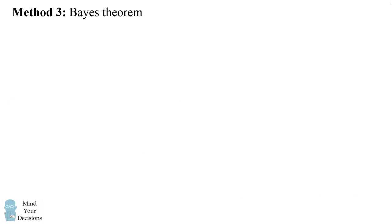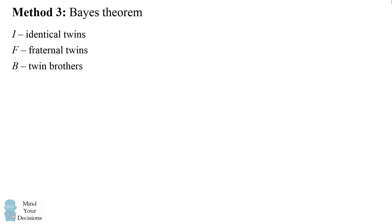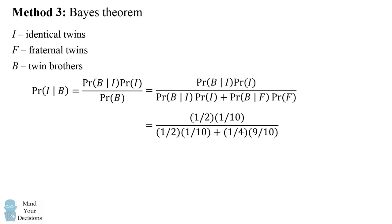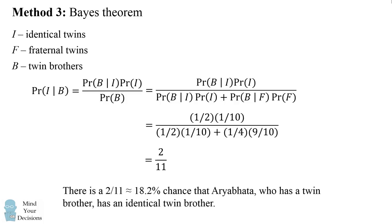The third way is to work through the textbook Bayes' theorem. We'll let I denote the event of identical twins, F denote the event of fraternal twins, and B denote the event of twin brothers. We're interested in the probability of I given B. By Bayes' theorem, this equals the probability of B given I times the probability of I, all over the probability of B. We can expand out the denominator because twins are either identical or fraternal. We now substitute in the relevant probabilities and simplify to get to the answer of 2 over 11. So again, we get to the approximately 18.2% chance.